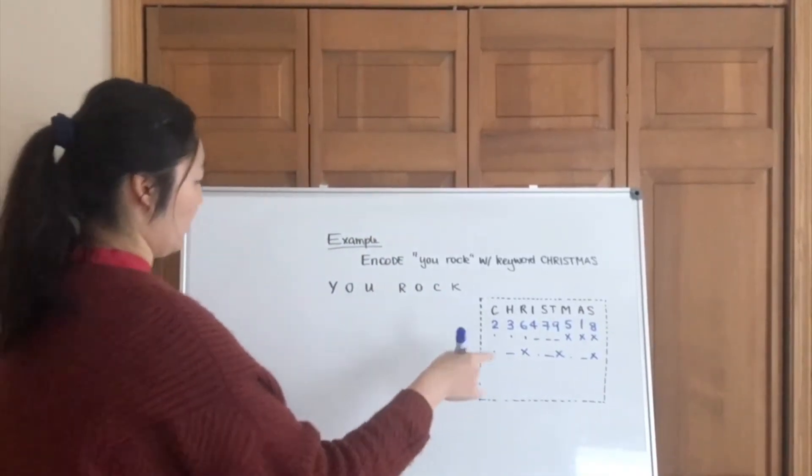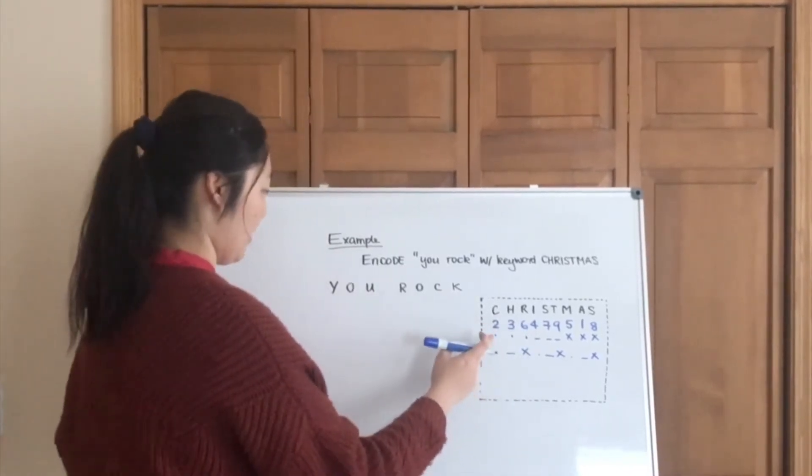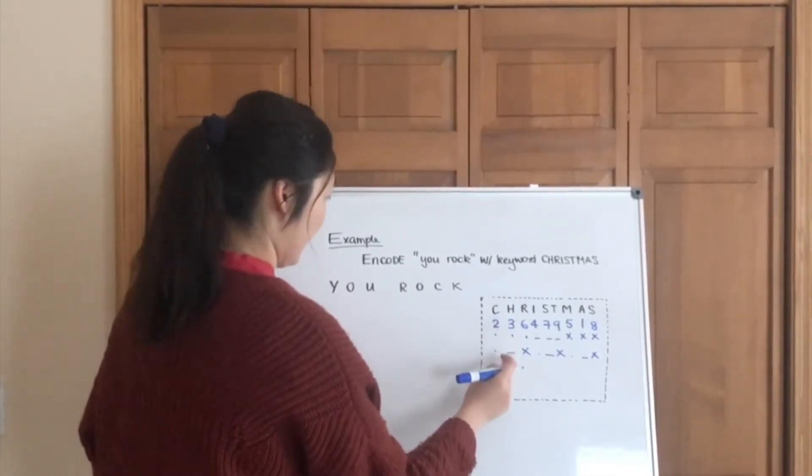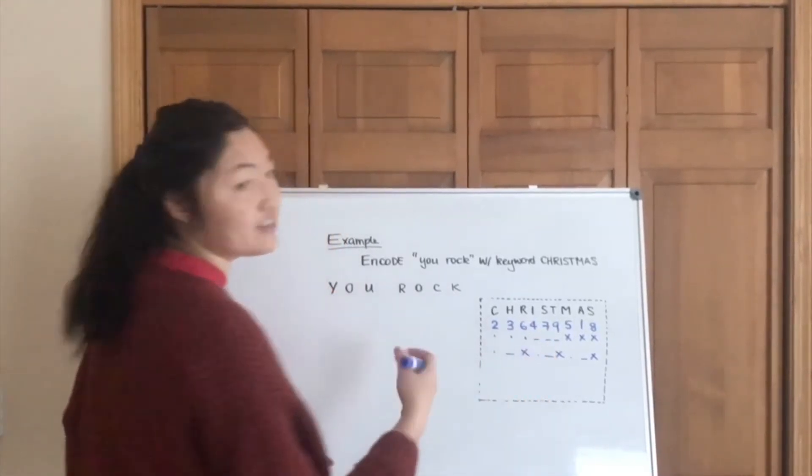So in this case, we can get to the result that, for example, 2 is going to map onto two dots, and then 3 is dot dash, and then 4 is going to be dash dot, et cetera.